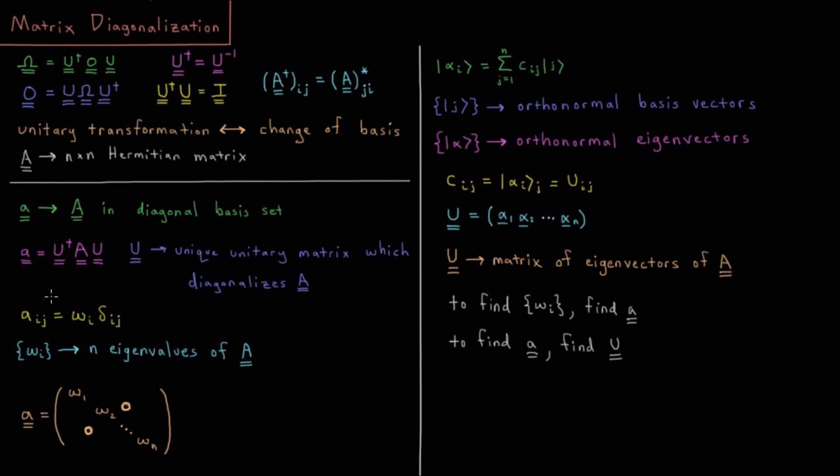So A, when it's diagonalized, is just going to be a bunch of values down the diagonal and zeros off the diagonal. So the elements of A will be Aij equals omega i, the ith eigenvalue, times the Kronecker delta, one when you're on the diagonal and zero off of it. So these omega are all the eigenvalues of A.